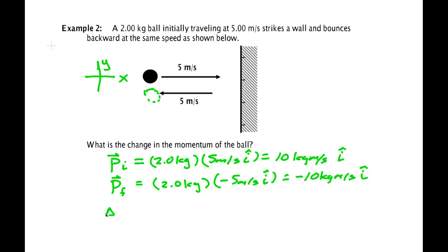Change in linear momentum is equal to the final minus the initial. That's minus 10 kilogram meters per second i-hat minus 10 kilogram meter per second i-hat. So the change in linear momentum is minus 20 kilogram meters per second i-hat.